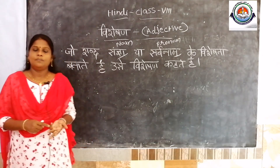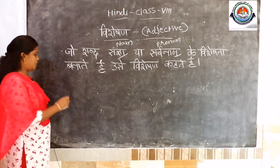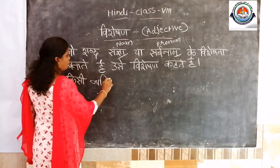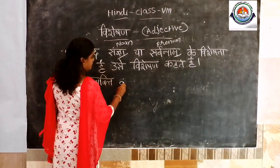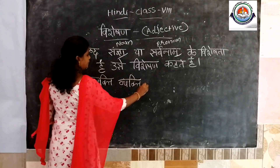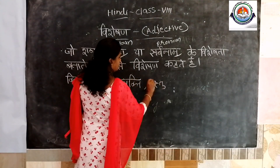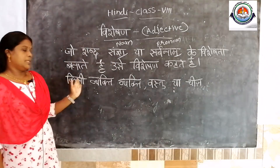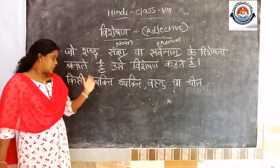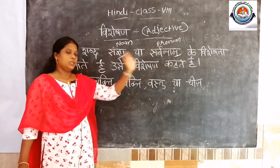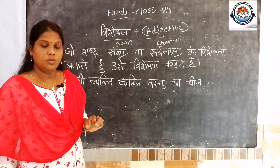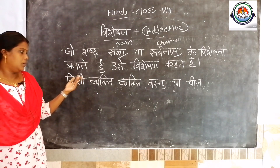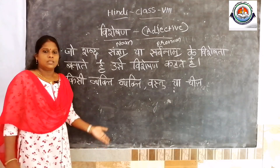What is noun? Name, things, place — that is called a noun. In Hindi: kisi vakti, vastu ya cheez — words that give awareness of a person, thing, or place are called sankhya. In English: place, things, persons or names — that is called a noun.